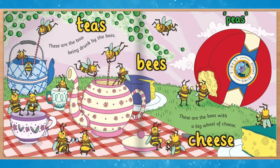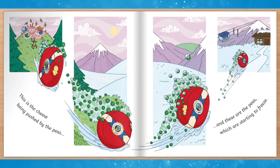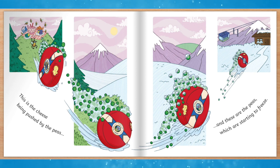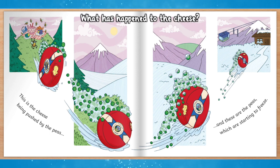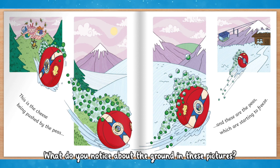What do you think might happen next? This is the cheese being pushed by the peas. And these are the peas which are starting to freeze. What has happened to the cheese? Where are the peas and the cheese going? What do you notice about the ground in these pictures?